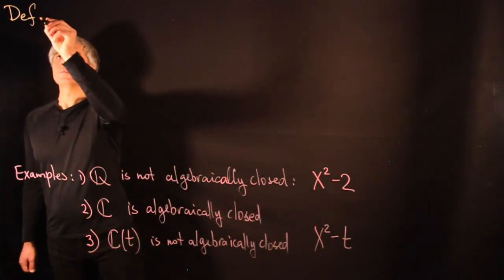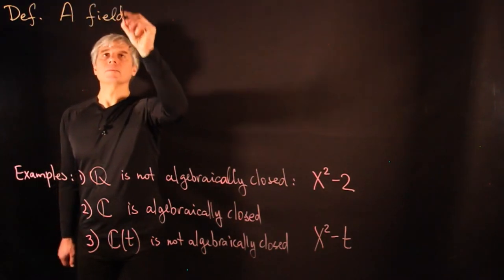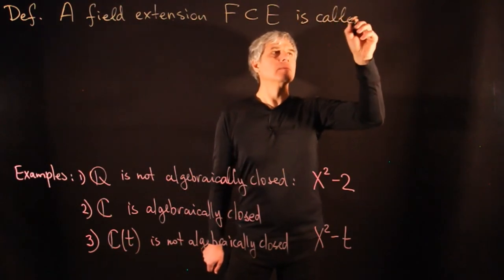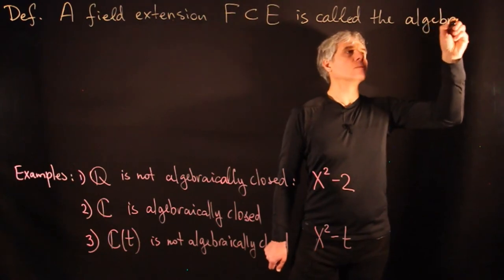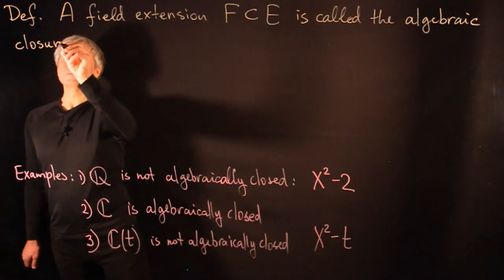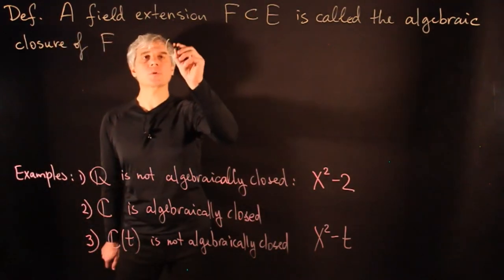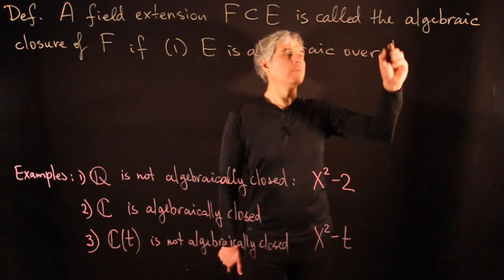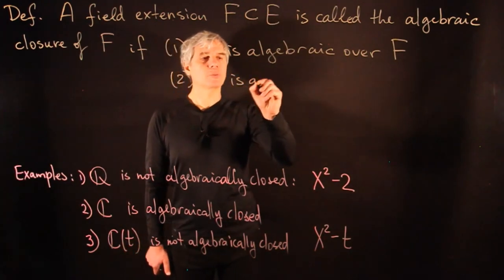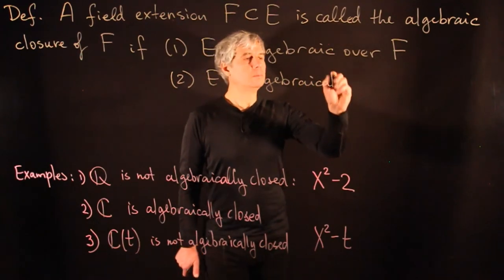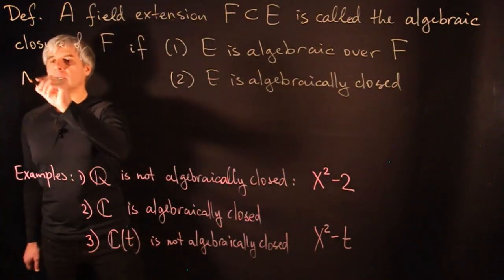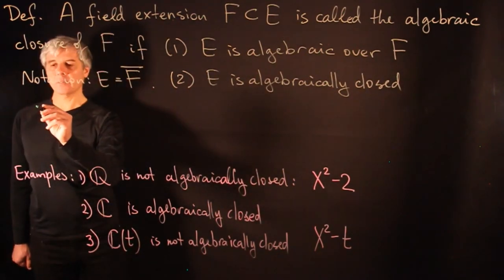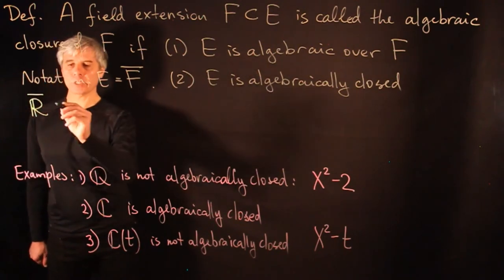Here we give a definition. A field extension F ⊆ E is called the algebraic closure of F if two conditions hold: one, E is algebraic over F; and two, E is algebraically closed. The notation is that E is the closure of F. As an example, the algebraic closure of the field of real numbers is the field of complex numbers: C is algebraically closed and this extension has degree 2, hence is algebraic.